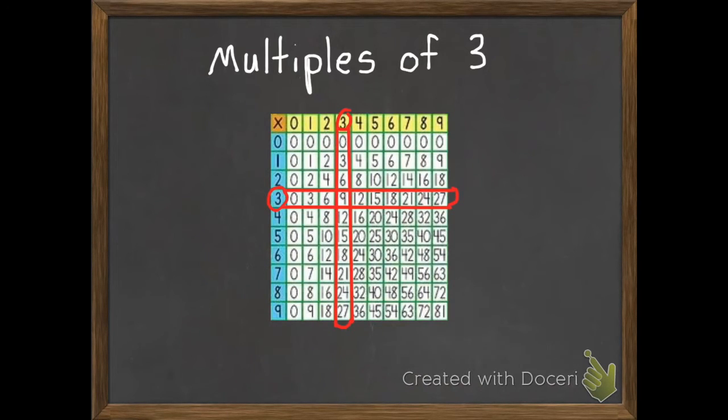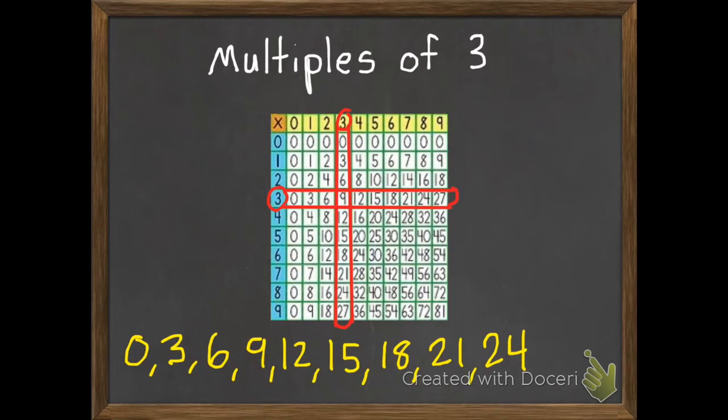So my multiples of 3 would be 0, 3, 6, 9, 12, 15, 18, 21, 24, and we could really go on forever.